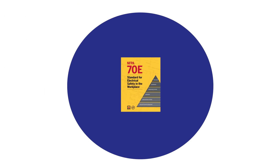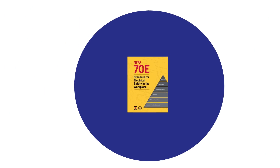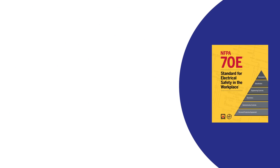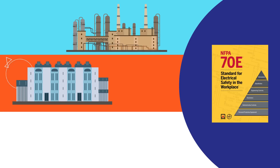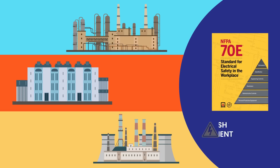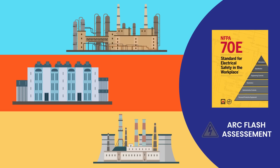Complying with NFPA 70E while ensuring the least amount of impact to plant day-to-day operations requires thorough collection of electrical system data and an arc flash assessment. An efficient and successful study should include the following steps.